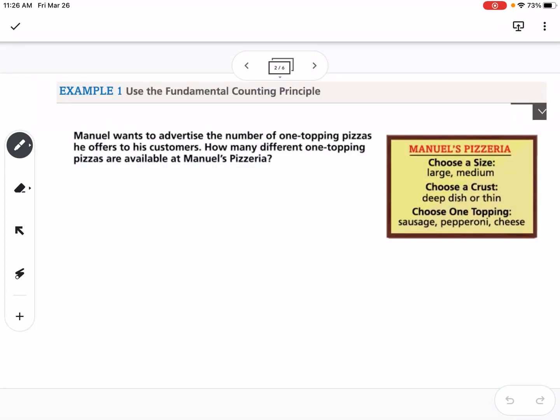Our first example is the fundamental counting principle. Manuel wants to advertise the number of one-topping pizzas he offers to his customers. How many different one-topping pizzas are available at Manuel's pizzeria?